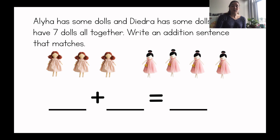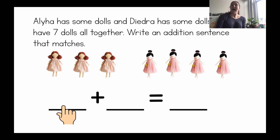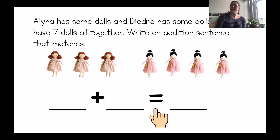So I'm going to need to fill in the blanks to show how many dolls Aaliyah has, plus how many dolls Deidre has, equals how many dolls all together. So right here I will write — I will count how many dolls Aaliyah has and I will write it, then plus I will count how many dolls Deidre has and I will write it. And then I will figure out what does that equal, how many are there all together, and I will write that number at the end. Watch me how I do this.